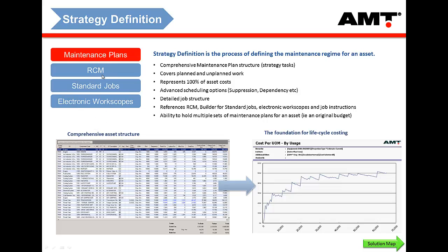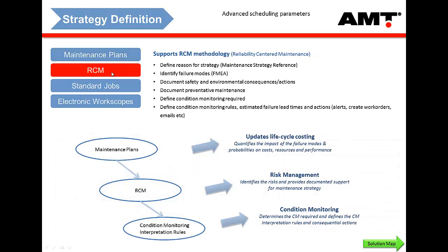Another aspect of defining your maintenance strategy is what we call RCM, or Reliability Centered Maintenance. This is where you look at your big components — something like an engine — and say we think it should last 18,000 hours as a before-failure target. But you also need to recognize that maybe 20% of the time it's going to be an after-failure occurrence, which will have a lower life and probably a higher cost, and that needs to be factored into your life cycle costing.